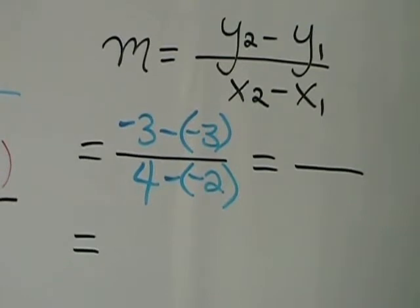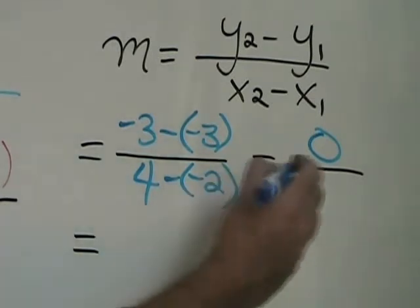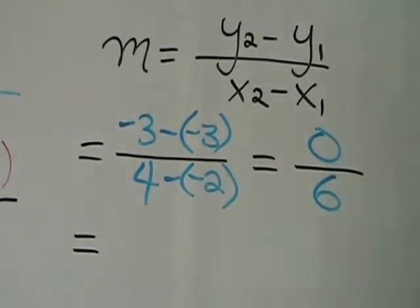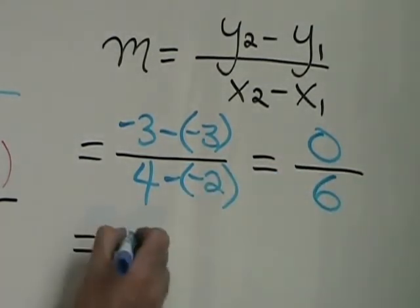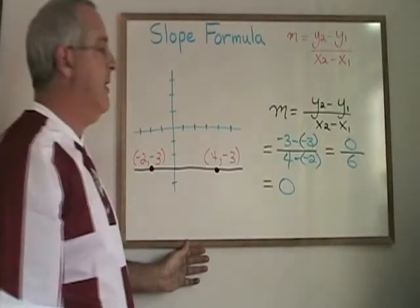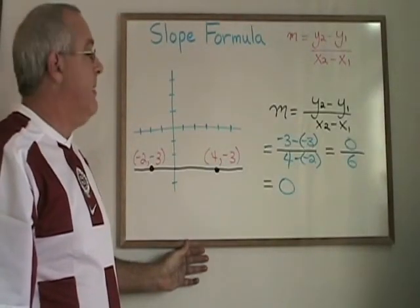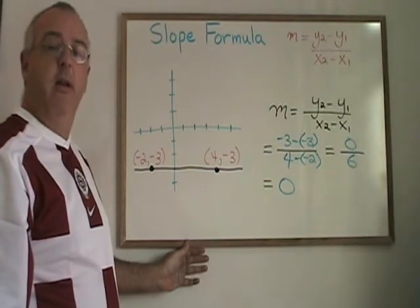Negative 3 minus negative 3 simplifies to give 0 in the numerator, and 4 minus negative 2 gives us 6. We have 0 over 6, which is equal to 0. And that makes sense because the slope of a horizontal line is always 0.